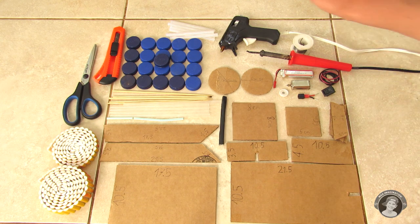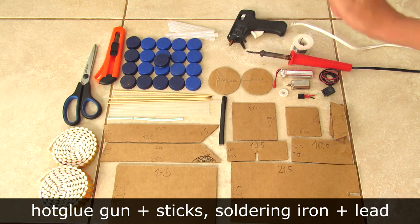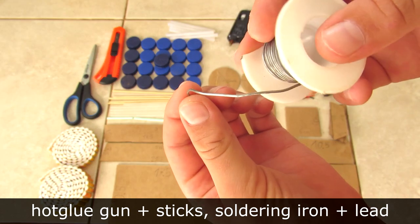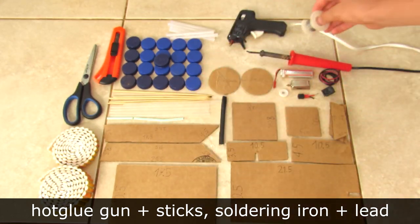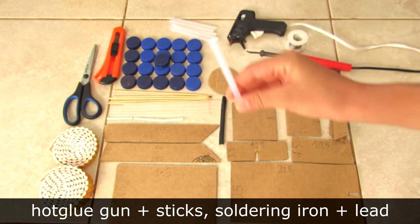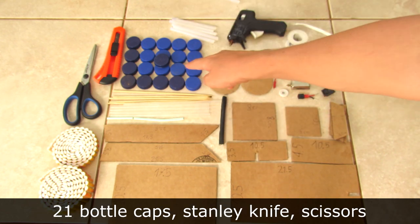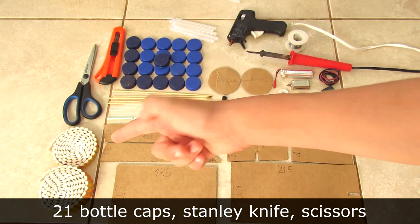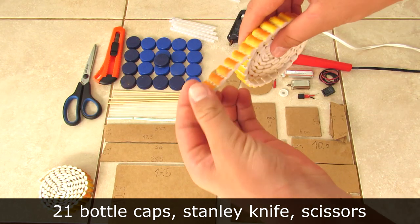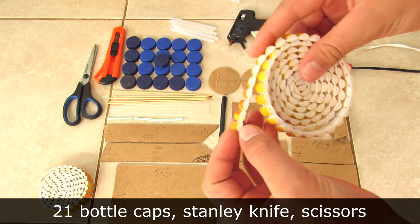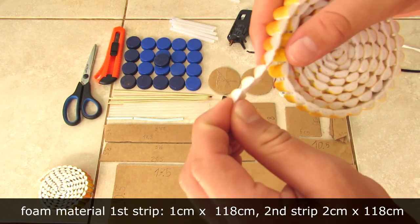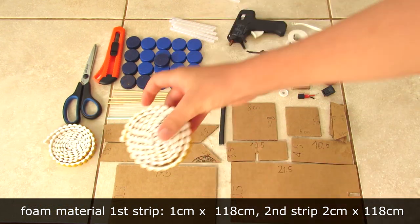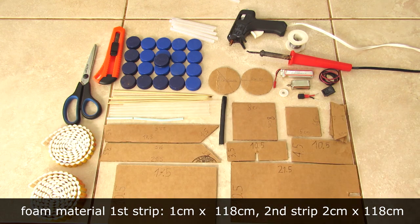A hot glue gun, a soldering iron and some soldering lead, some hot glue sticks for the hot glue gun. We're going to be using 21 bottle caps, a Stanley knife, a pair of scissors. Some of this foam treading material - this one is one centimeter in width and the second one is two centimeters in width. Make sure they're the same length. And you'll need some straws, five straws, five skewers, and some small straws.